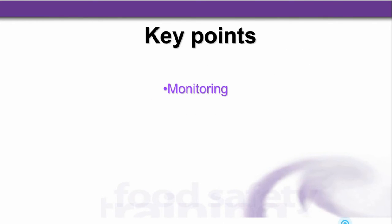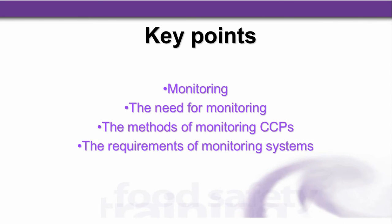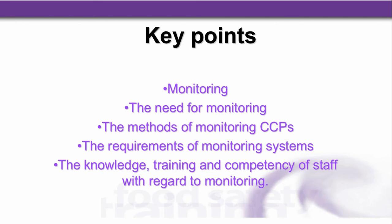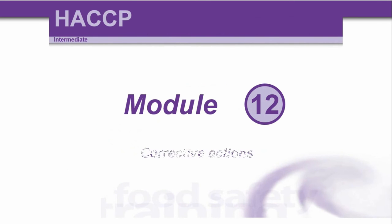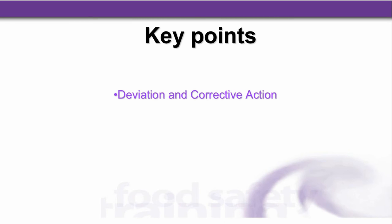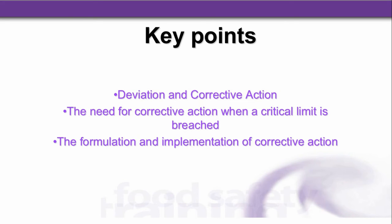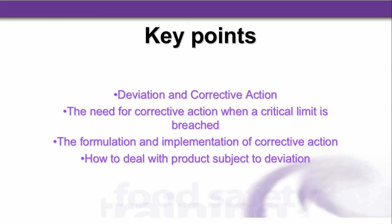Module eleven covered monitoring. Key points included the need for monitoring, the methods of monitoring CCPs, requirements of monitoring systems, and the knowledge, training and competency of staff with regard to monitoring. Module twelve was corrective action. Key points included deviation and corrective action, the need for corrective action when a critical limit is breached, formulation and implementation of corrective action, how to deal with products subject to deviation, and the need for traceability and recall.